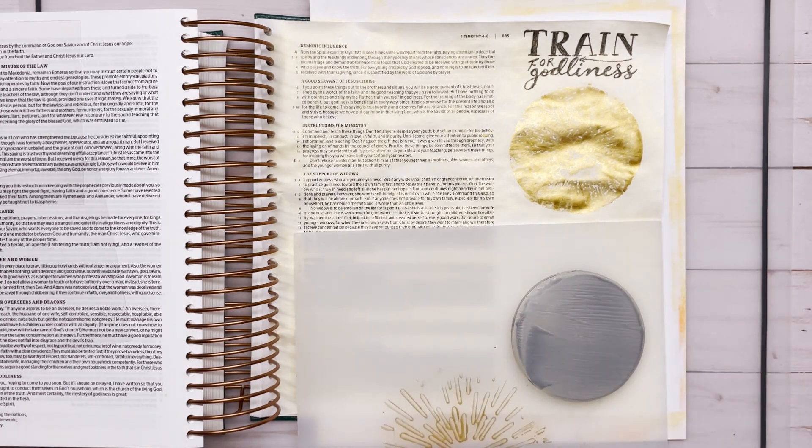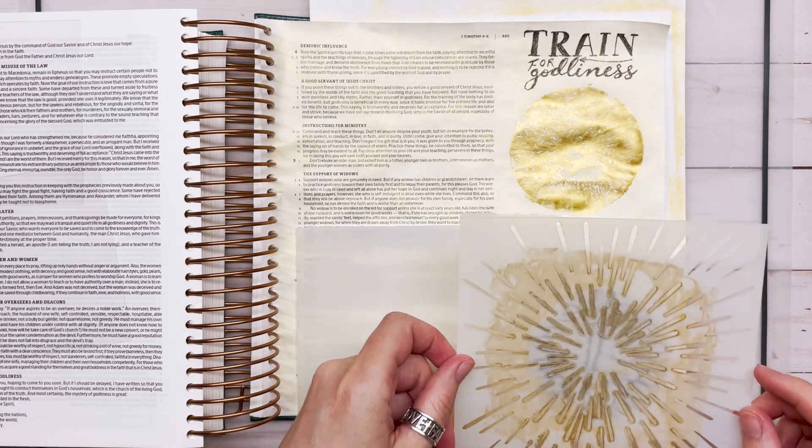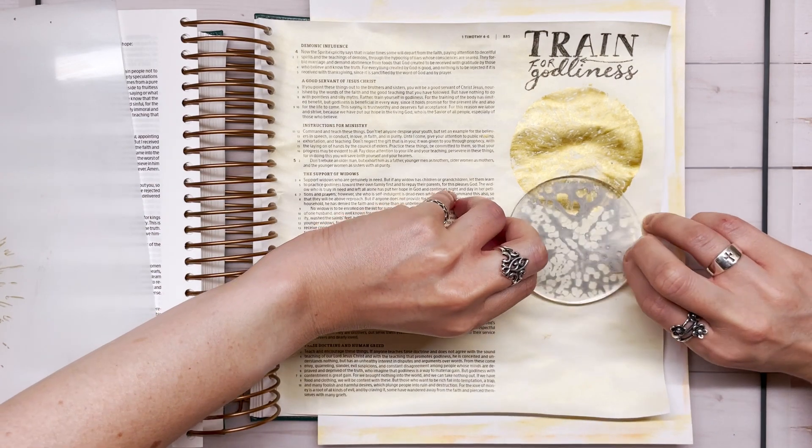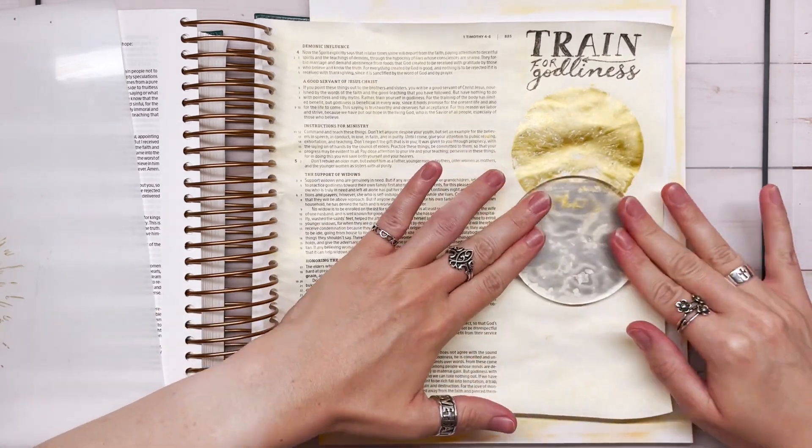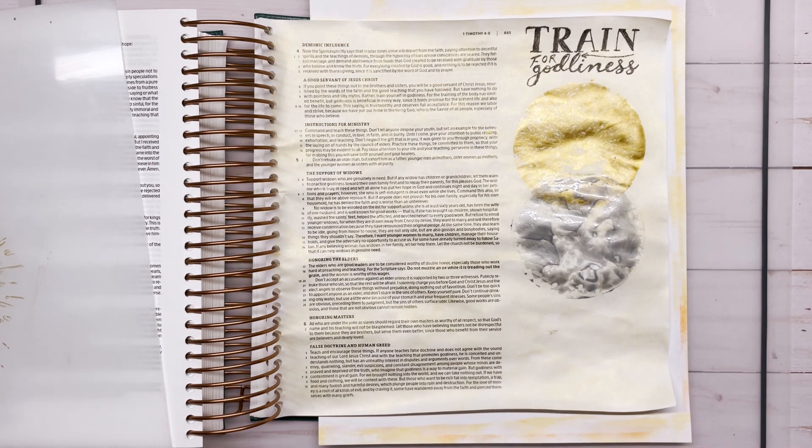So this next color is silver. For some reason the paint was a little more watery than the other two colors, so you'll see here it didn't transfer quite as cleanly. It didn't create quite as nice of a circle, but that's okay. We're gonna go back and fix it here in a minute.